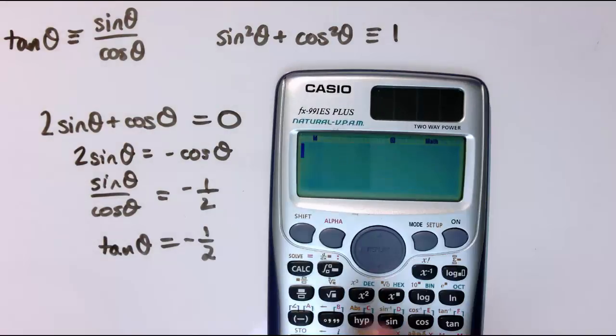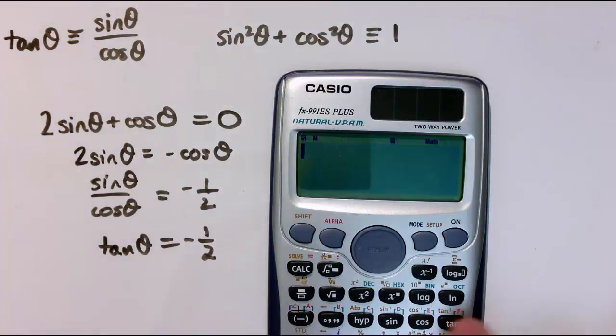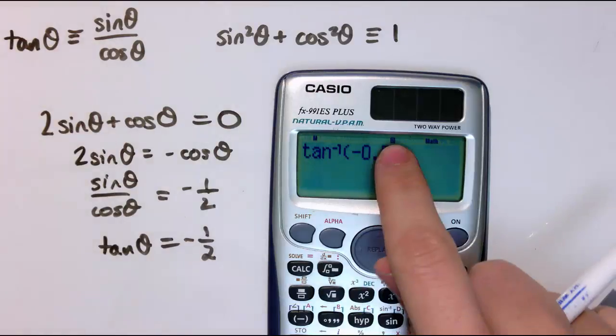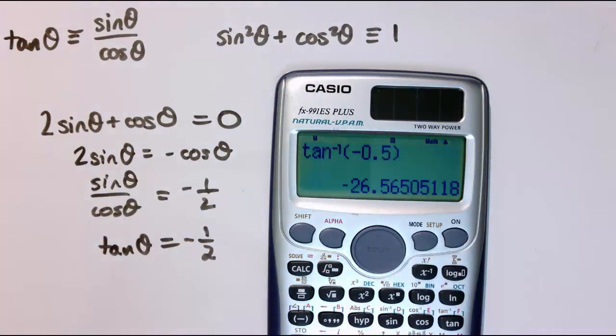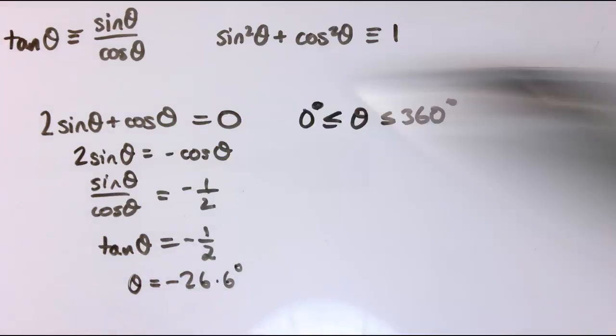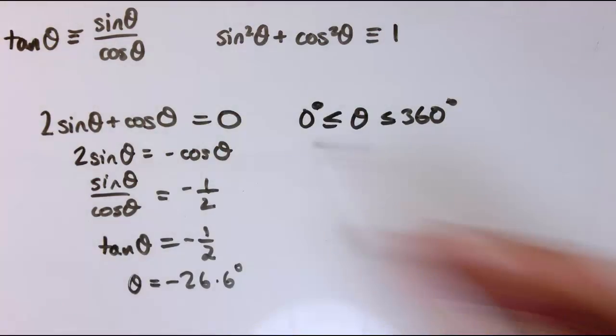So I can get the value of θ by doing tan inverse of minus 1 half. I am in degrees mode. And that gives me a value for θ, which is minus 26.6 degrees. Now, the only problem with that value is that it's not in this range, not up to 360 degrees.